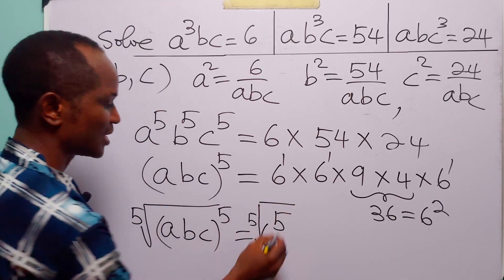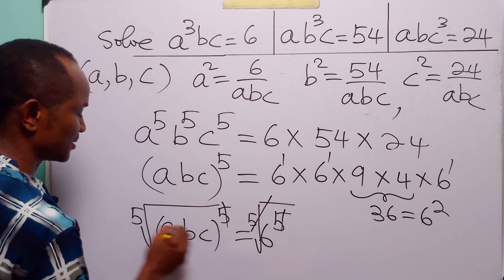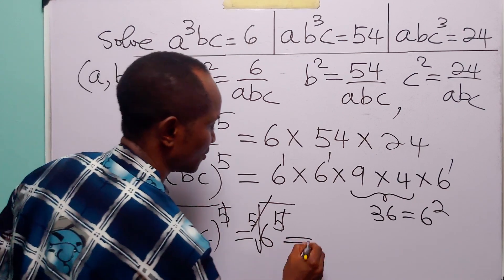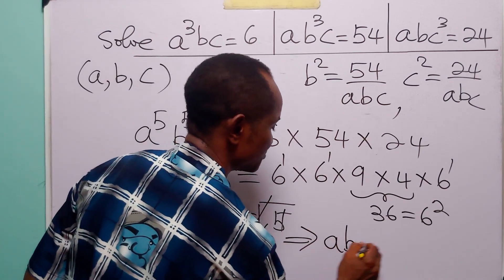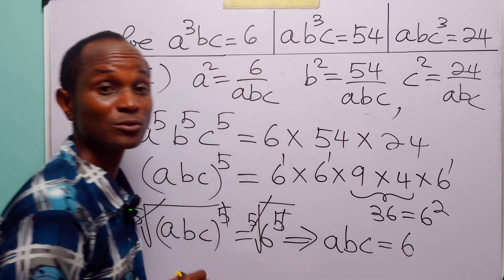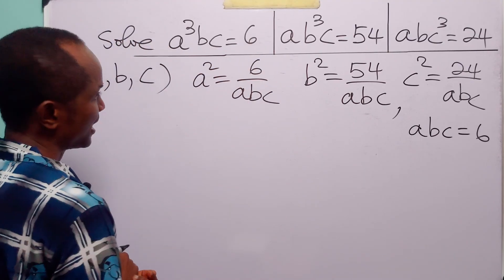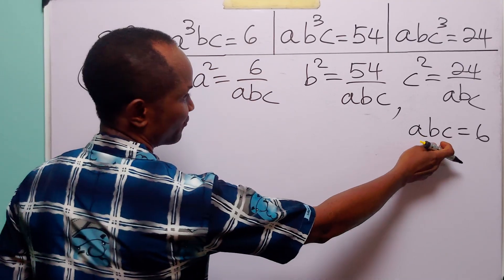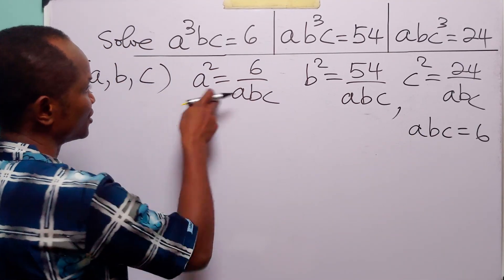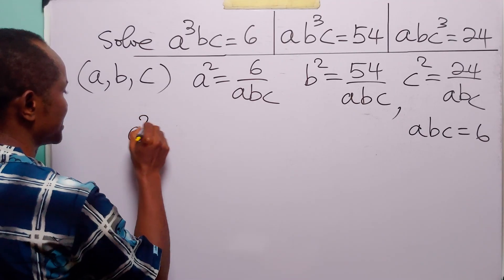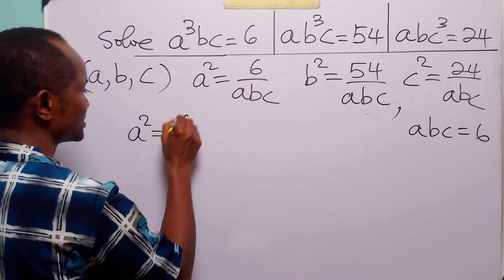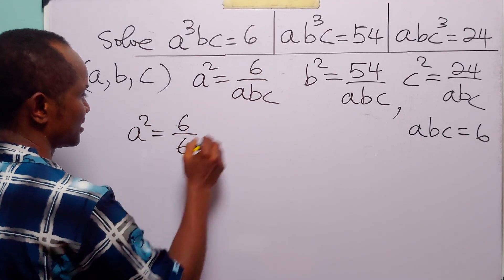What we are now going to do is take the fifth root of both sides of this equation. When we do that, this cancels and we have that A times B times C is equal to 6. Now that we have found A times B times C, to find A we have A squared is equal to 6 over 6.